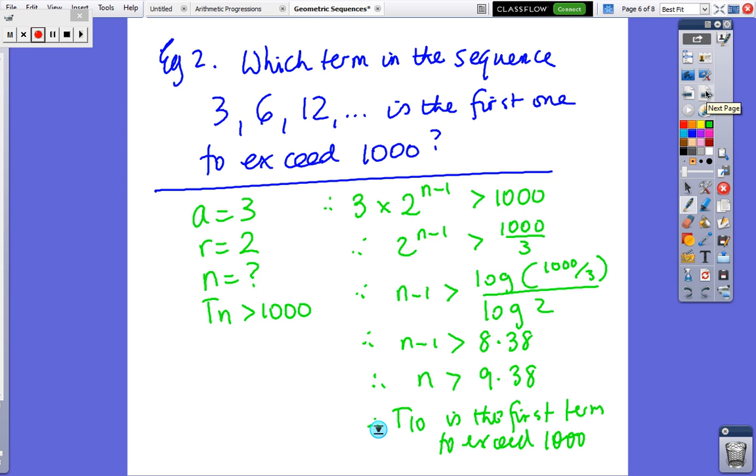Which term in the sequence 3, 6, 12 is the first one to exceed 1000? You could just keep the pattern going, do guess and check. So what I'm doing is trying to do it systematically. I write a little legend. So A is 3, R is 2, it's been doubled. We don't know N, but we want the term to exceed 1000. So we just set up an equation, or actually an inequality because we want it to be greater than. So AR to the (N-1), we don't know N, so we can't subtract yet, is greater than 1000.